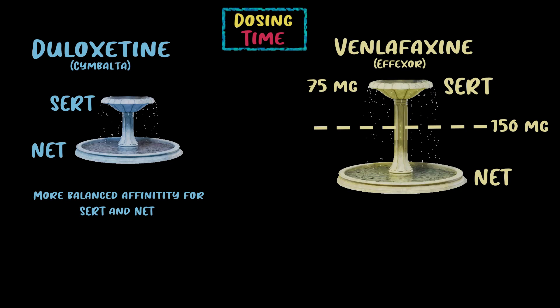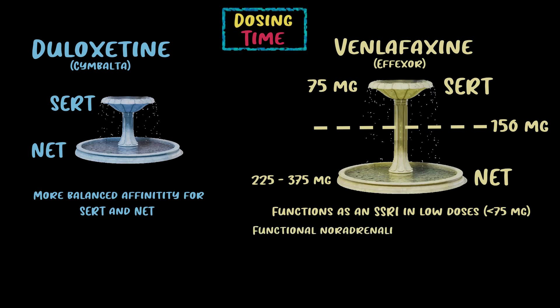Level two — NET — doesn't really kick in until 150 milligrams for Effexor. This is consistent with Stahl's book: from 75 to 225 milligrams it's predominantly serotonergic in some patients, and 225 to 375 is dual serotonin and norepinephrine in most patients. The big takeaway is that below 75 milligrams you're really just doing an SSRI; to get meaningful norepinephrine reuptake you really need to hit 225 to 375 milligrams.